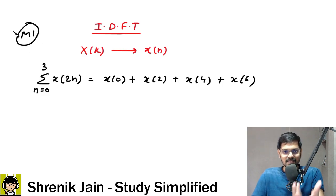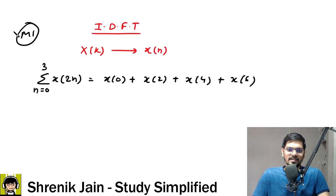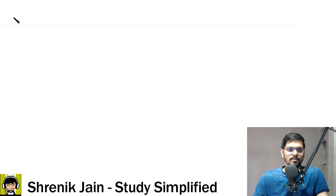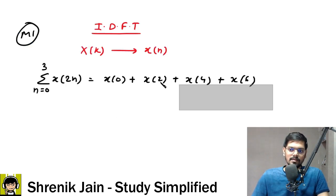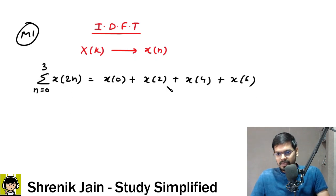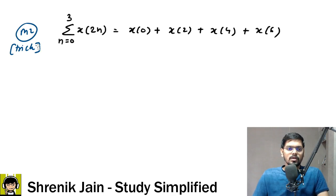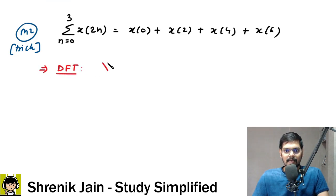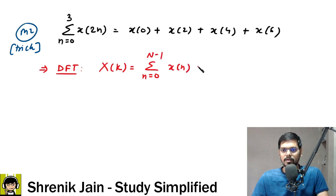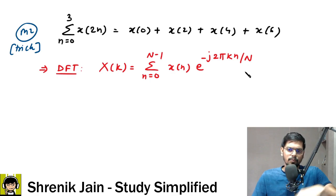Yes, because that is Method 1 — the standard solution — and it will surely take 2 minutes 30 seconds or more. Method 2 is a tricky way to get these terms. The tricky way uses the DFT formula given in the question: X(k) = summation from n=0 to N-1 of x(n) times e to the power minus j2πkn/N, where capital N is 8 because it is an 8-point DFT.